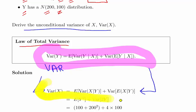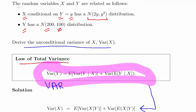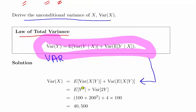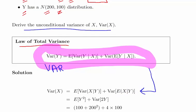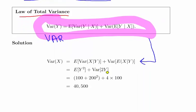We re-express that formula as follows. The expected value of the variance of X conditional on Y is essentially the expected value of y squared. The variance of the expected value of X conditional on Y: the expected value is 2y, so that gives us the variance of 2y.